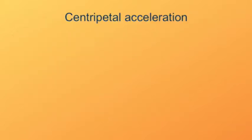What's the centripetal acceleration? We already know that the magnitude of the centripetal acceleration is v-squared over r, where v is the tangential speed and r is the radius.